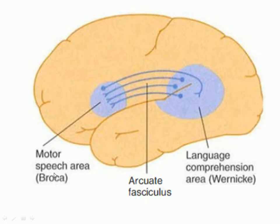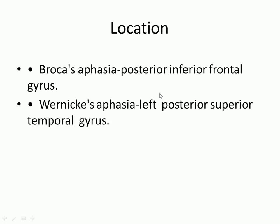Here is the motor speech area — Broca's area. Here is the language comprehension area, which is Wernicke's area, and here is the arcuate fasciculus between the two areas. Location: Broca's aphasia is the posterior inferior frontal gyrus; Wernicke's aphasia is the left posterior superior temporal gyrus.